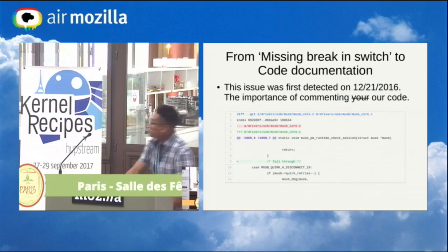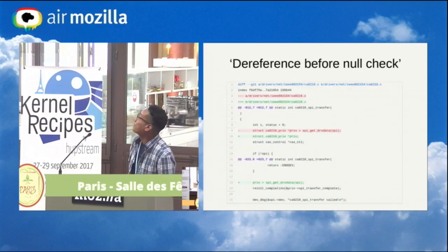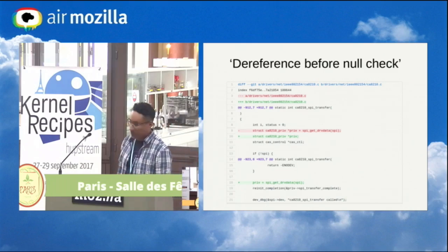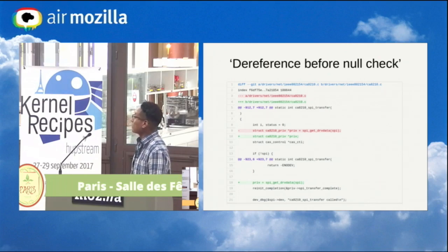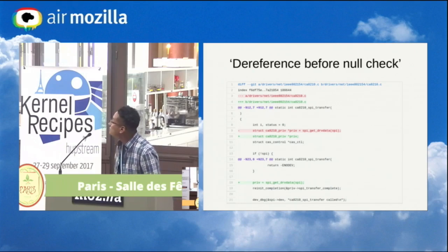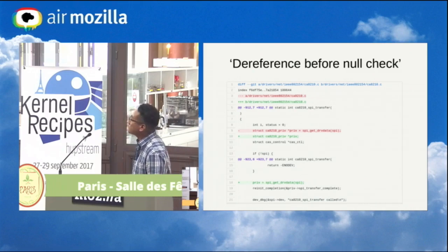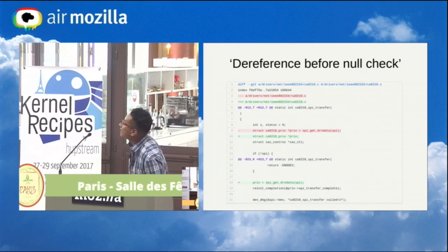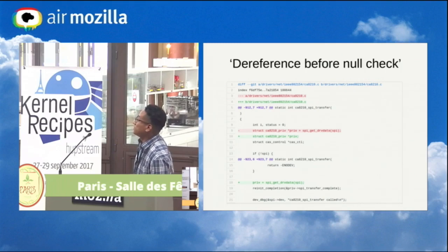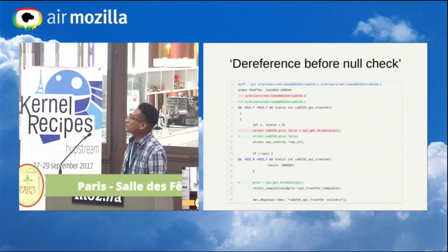The next example is actually pretty common in the kernel — a null pointer. What is going on here is that there is a call to the function SPI_get_driver_data. What happens inside that function is that the SPI pointer is being dereferenced. But the problem is that at line 13 there is a null check — the pointer is being dereferenced before this null check.